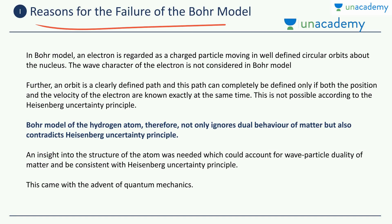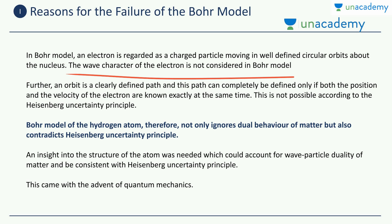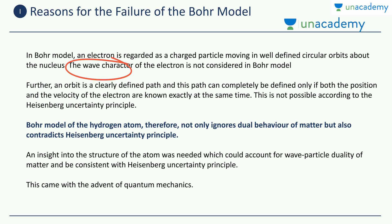Why was Bohr's model not sufficiently able to explain the two developments we studied in the previous video? In the Bohr's model, an electron is regarded as a charged particle moving in well-defined circular orbits about the nucleus. However, the wave character of the electron is not considered in Bohr's model. We said that matter shows both particle properties as well as wave-like properties. Bohr's model was not sufficient to answer how electrons show the wave character, so we needed a different model.